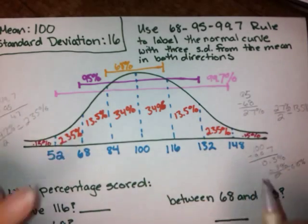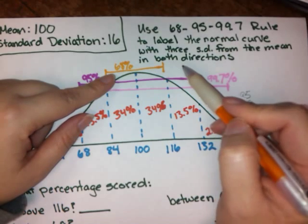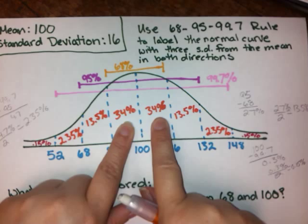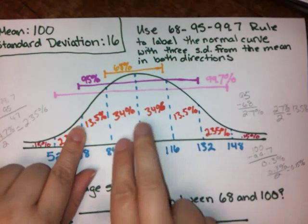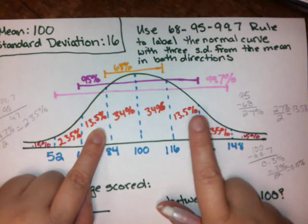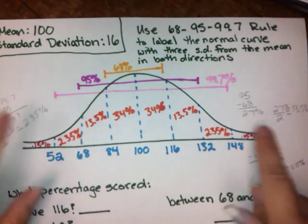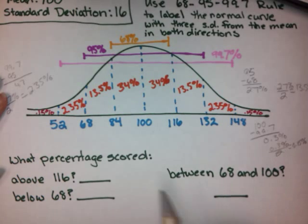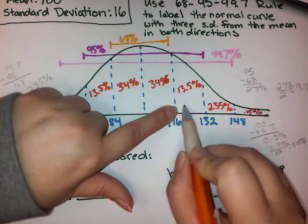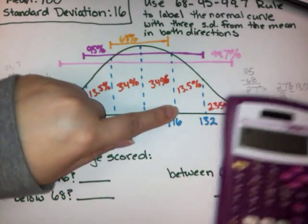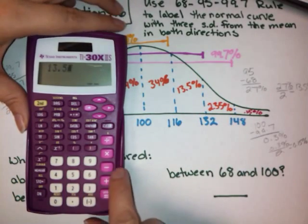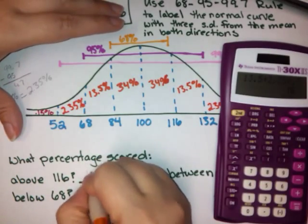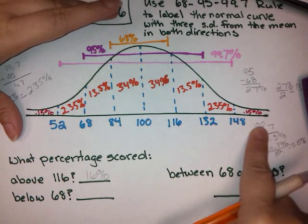If you get stuck and can't remember the percents, you can use the rule to derive them. Now we can answer the questions. What percentage scored above 116? We find 116 on the curve and add up all the percentages above it: 13.5 plus 2.35 plus 0.15 equals 16%.